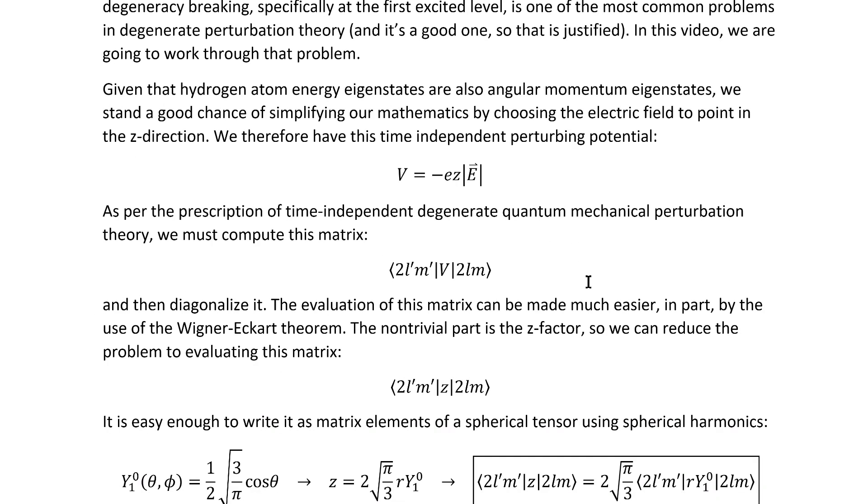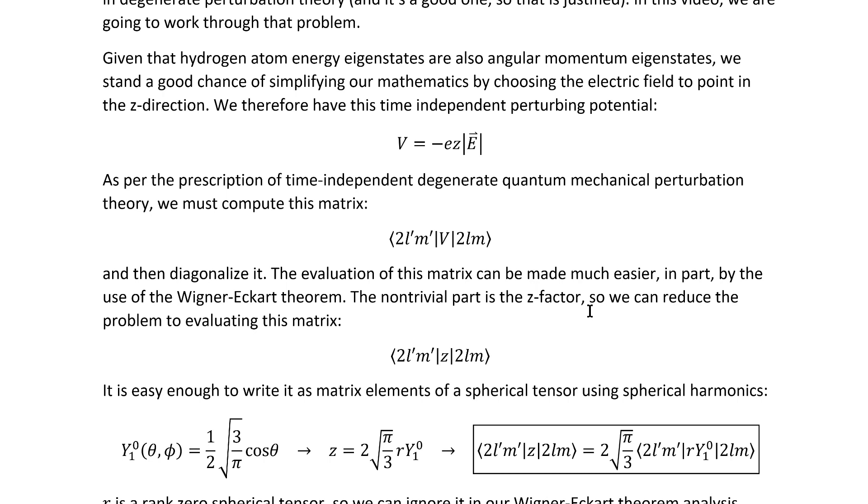As per our knowledge of time-independent degenerate quantum mechanical perturbation theory, we must evaluate this matrix and then diagonalize it in order to get the corrections that we're looking for and to discover what states those corrections actually apply to, because again, they'll probably be linear combinations of more than one.